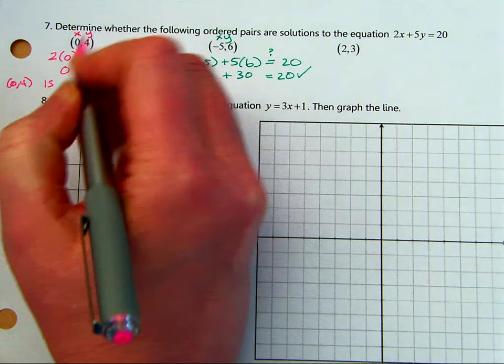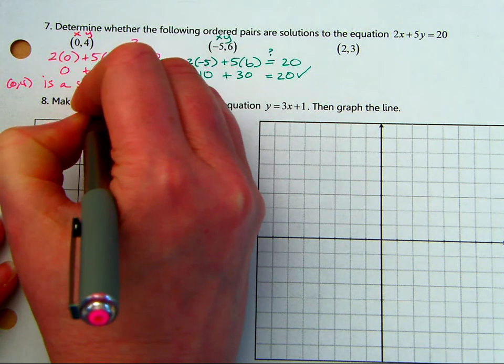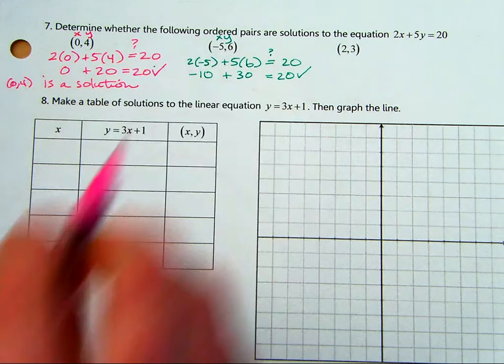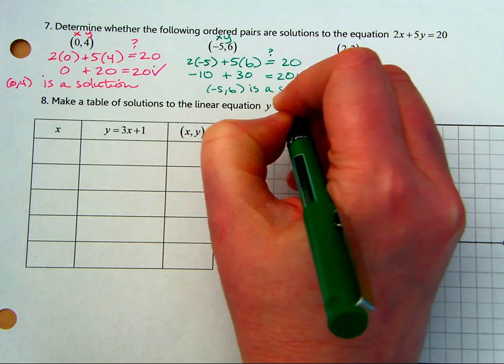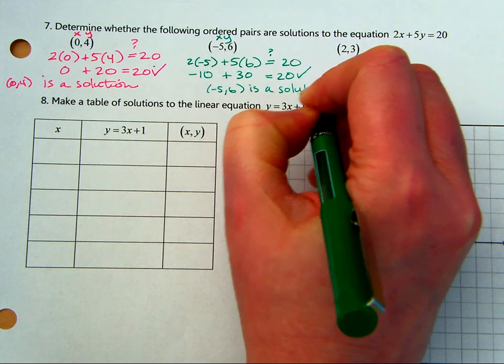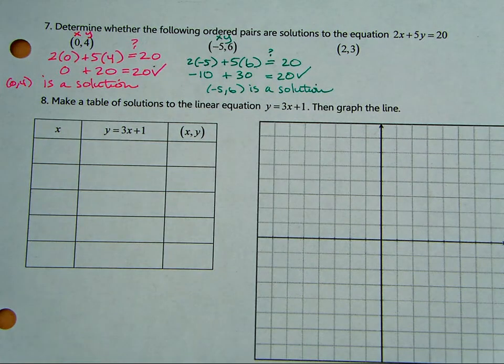0, 4 is a solution. And then negative 5, 6 is a solution. Okay, you try the third one.